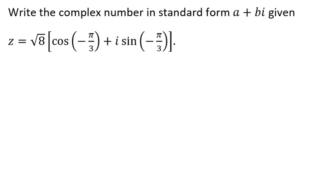In this video, we're going to be writing a complex number in standard form — so a plus bi — given that z equals the square root of 8 times the cosine of negative pi over 3, plus i times the sine of negative pi over 3.